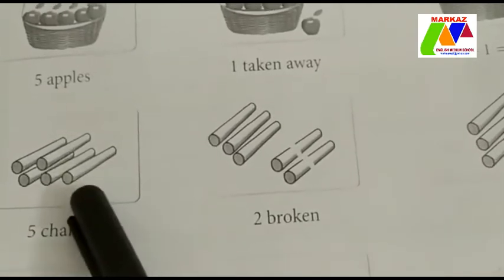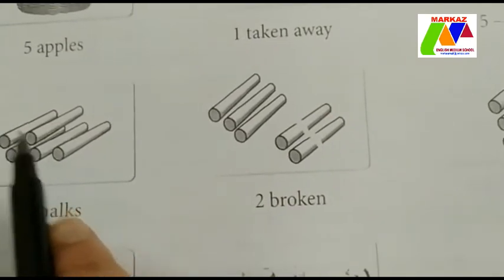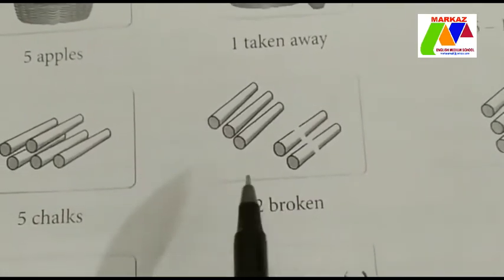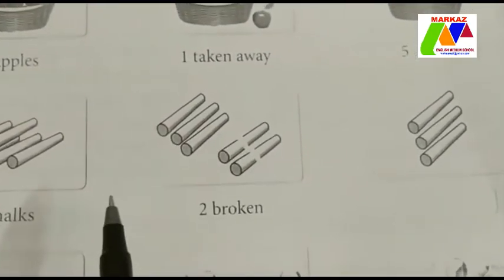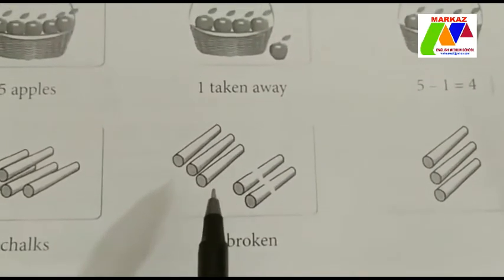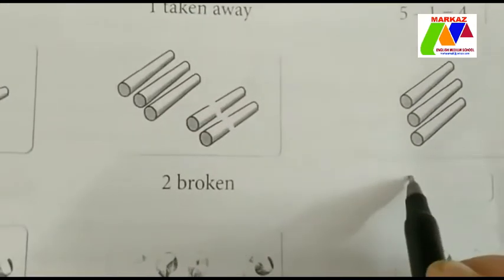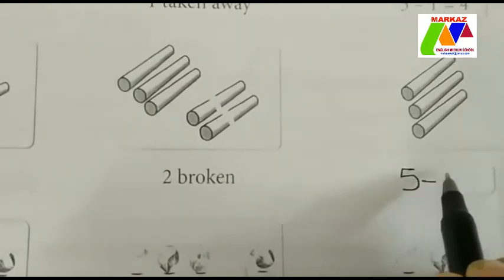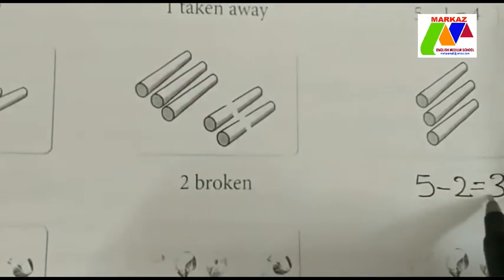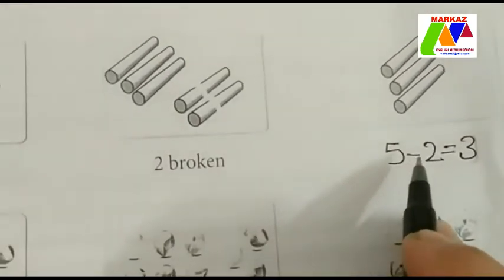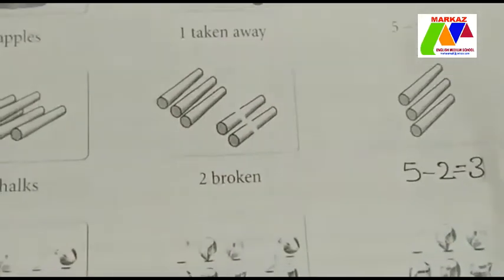5 minus 1 is equal to — please count it: 1, 2, 3, 4, 5. Here we can see 5 chalks. 2 chalks broken. So how many chalks are here? 5 minus 2 is equal to 3. The answer is 3. All of you clear?